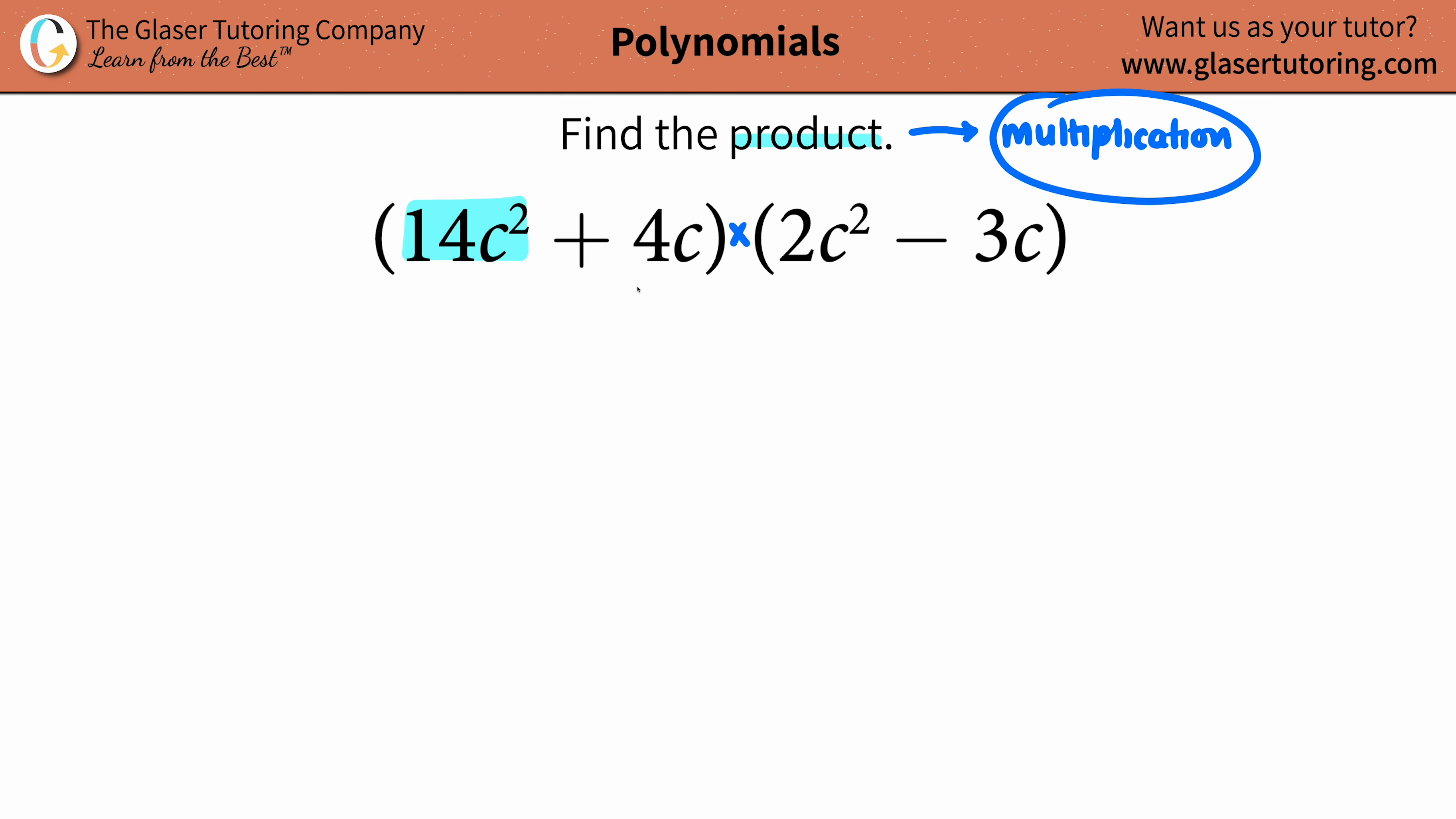We're not going to multiply because we're literally adding those two together. We will always multiply across the pond or across the parentheses. We're going to take that 14c² and multiply it by this first term, the 2c².